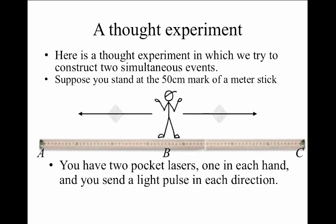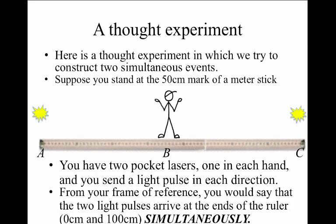Since I'm standing at exactly the center, then those pulses of light should arrive at the ends of the meter stick at exactly the same time. For me, standing at the center like this, I would judge that those two events, namely the arrival of the pulse of light at A and the arrival of the pulse of light at C, as being simultaneous. It sounds so reasonable when I say it like this.